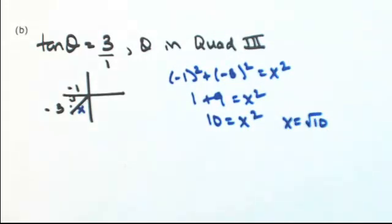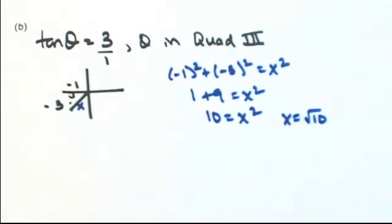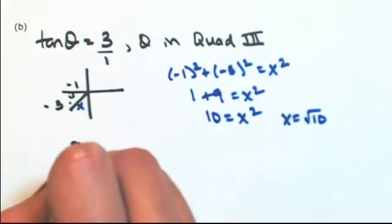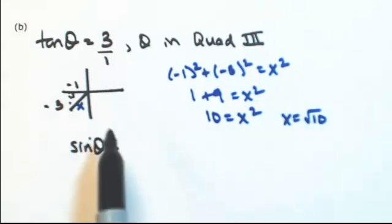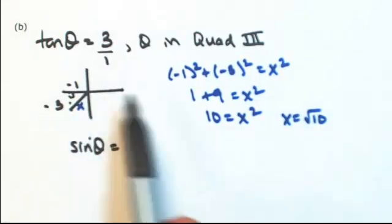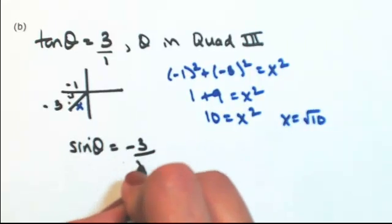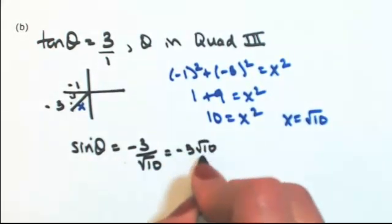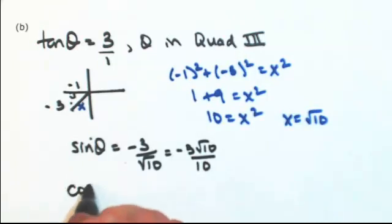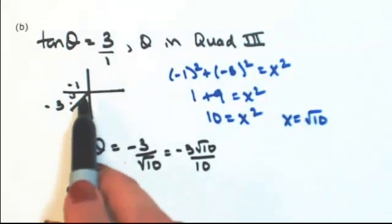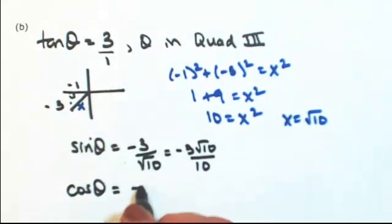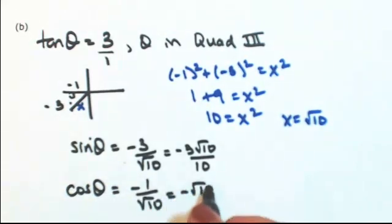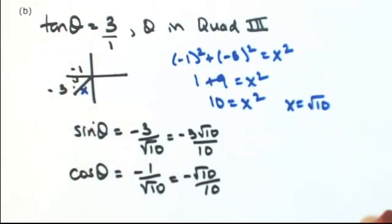Now that we have the triangle and all the sides, we can find all the other trig functions of theta. So then the sine of theta is opposite over hypotenuse, so negative 3 over square root of 10. Cosine of the angle, adjacent over hypotenuse. Just rationalizing.